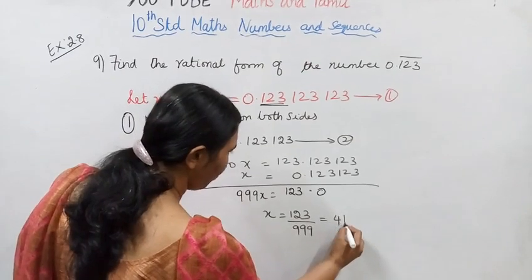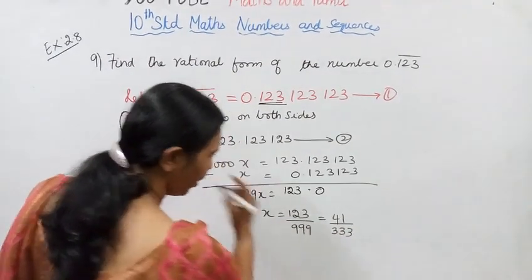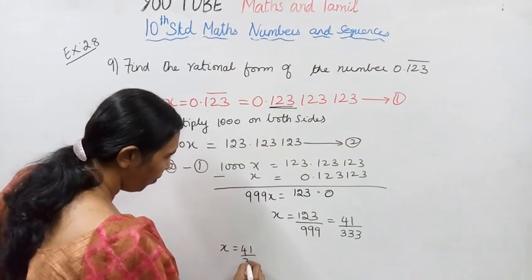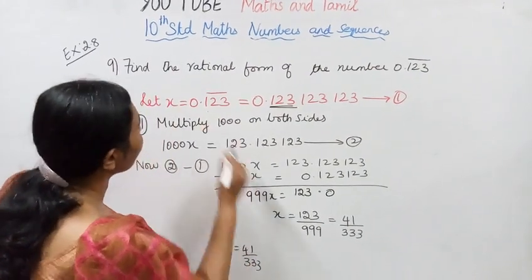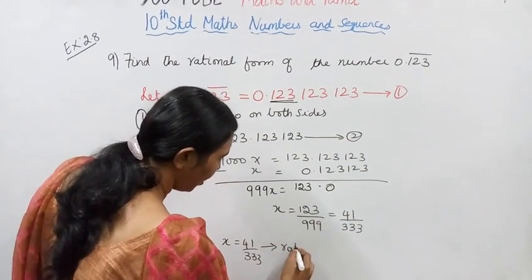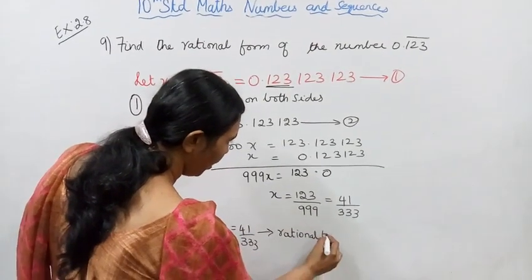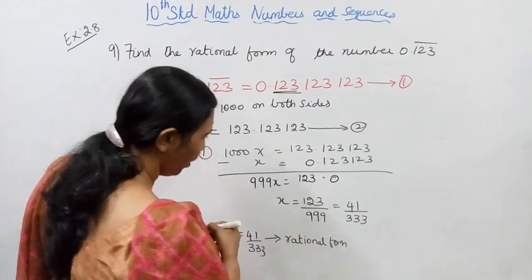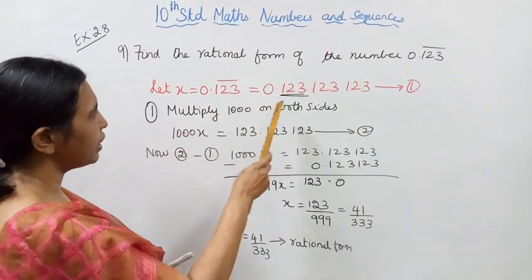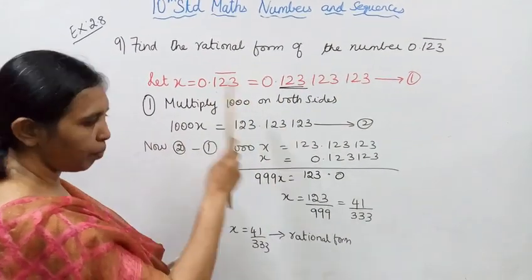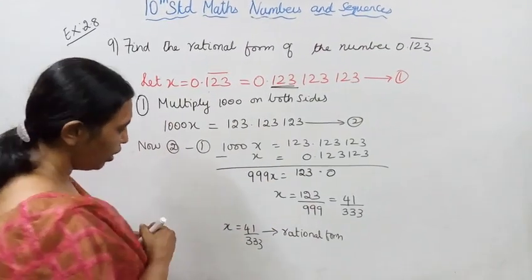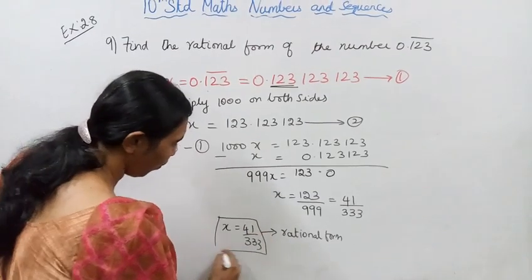Therefore x equals 123 by 999. Simplifying this fraction — dividing by 3 — gives x equal to 41 by 333. That is the rational form of the repeating decimal 0.123.